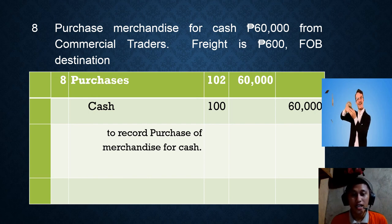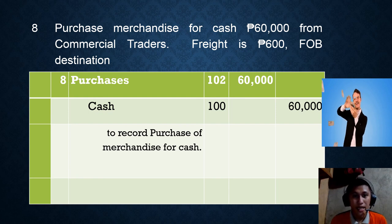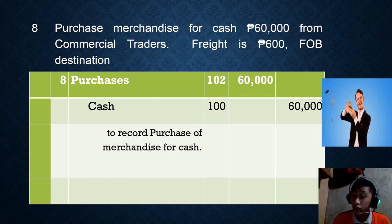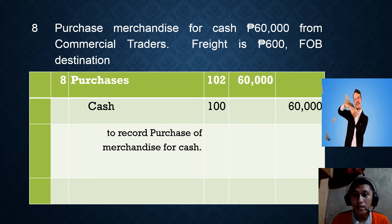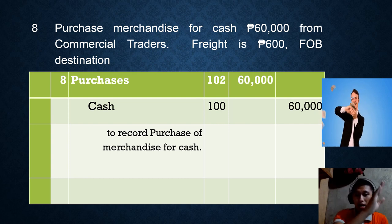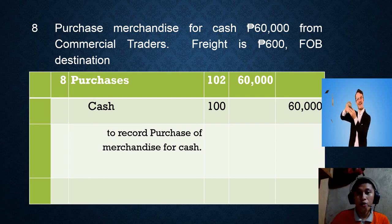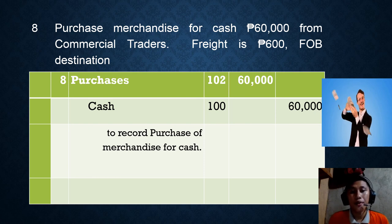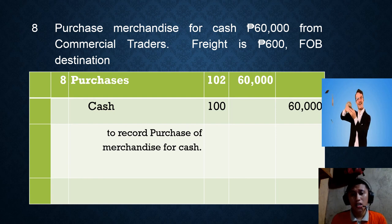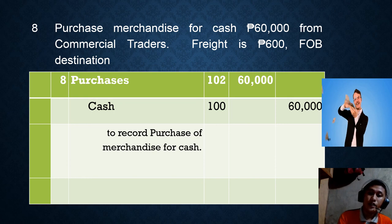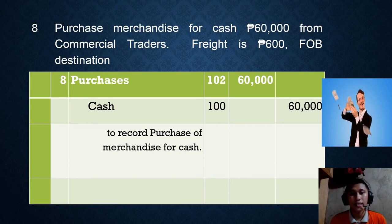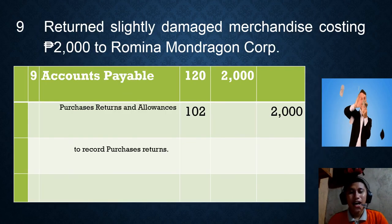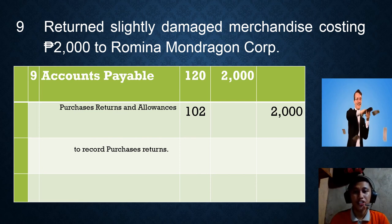September 8: Purchase merchandise for cash, 60,000 pesos from Commercial Traders, freight 600 FOB destination. Since it is FOB destination, the seller pays the freight — it will not be included in the buyer's journal entries. So: Purchases is debited 60,000 and Cash is credited 60,000. Cash decreased because payment was made. Explanation: 'To record purchase of merchandise for cash.'